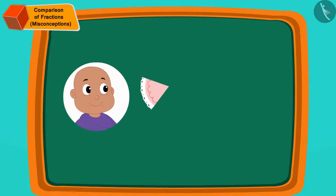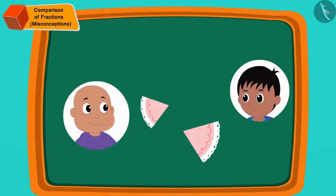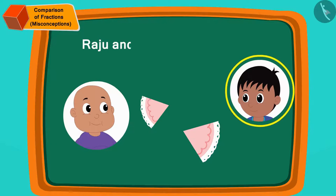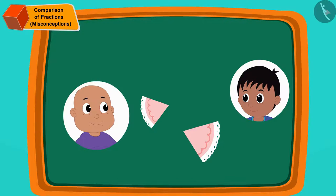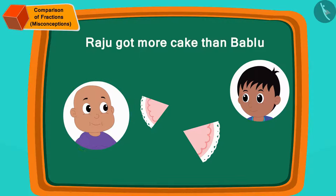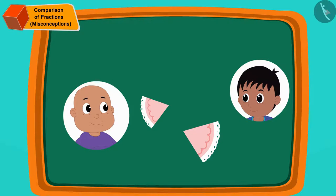Now Raju told Bablu that he and Bablu had got equal cake. But Bablu is fighting with Raju that Raju has got more cake than him. Children, can you tell which of the two is correct?